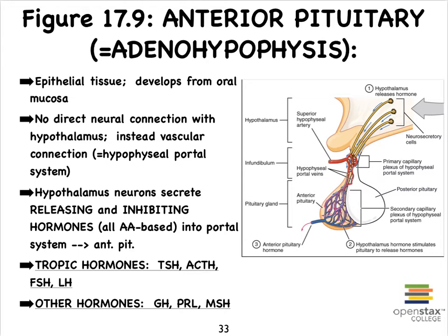We're seeing the term portal again — we've come across this before. For instance, we learned about the hepatic portal system, where the hepatic portal vein carries blood into the liver, which is then drained by a hepatic vein — from vein through capillaries back to a vein. In the case of the kidneys, we had an arteriole going to a capillary bed called the glomerulus, leaving via an arteriole again. That's another example of a portal system — two capillary beds interconnected.